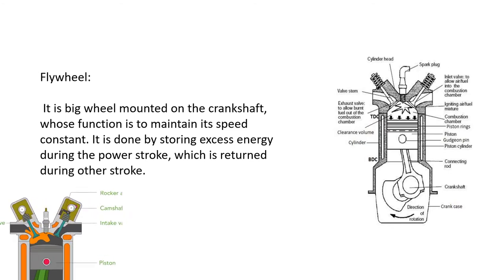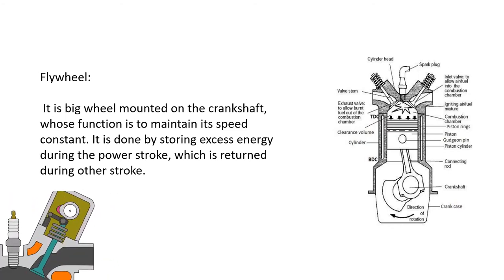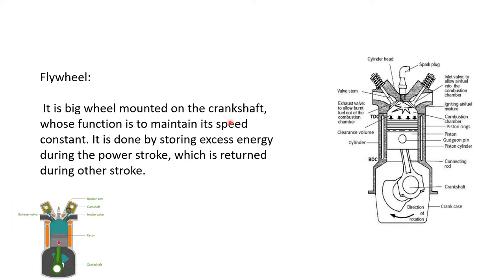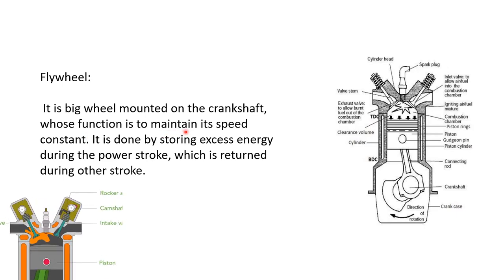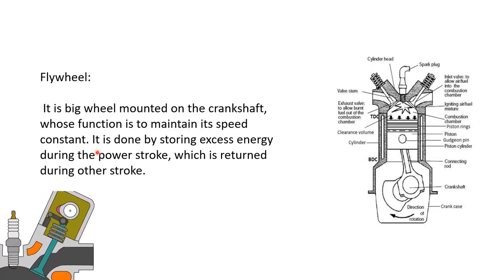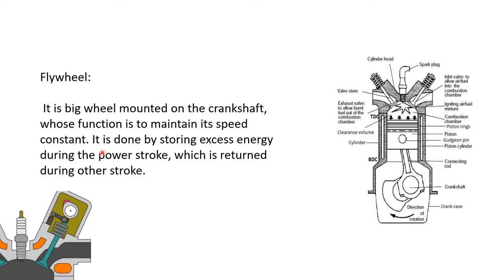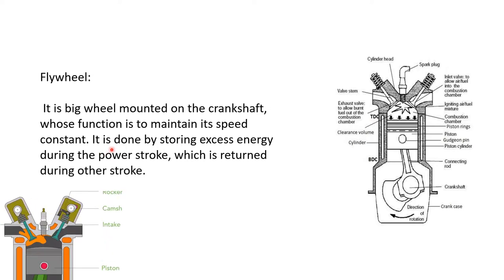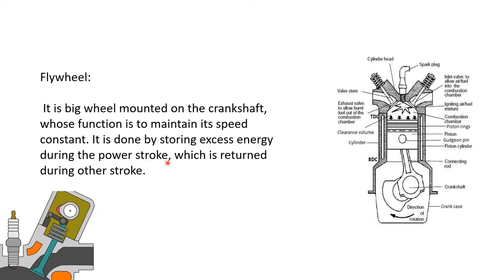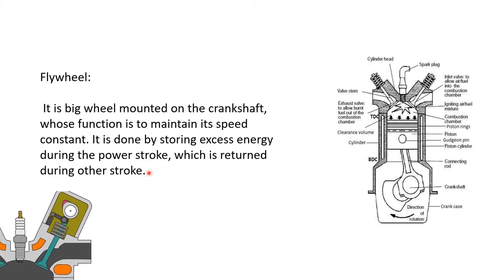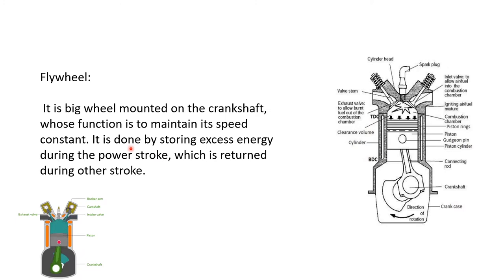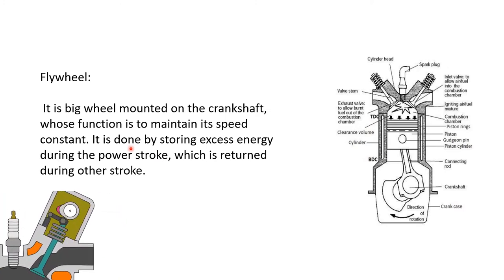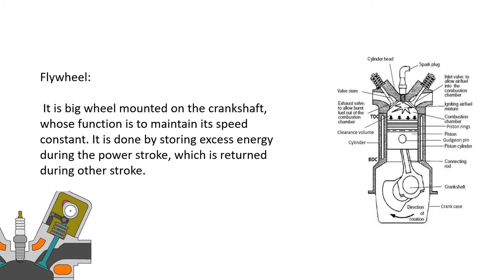The flywheel is a big wheel mounted on the crankshaft whose function is to maintain constant speed. It does this by storing excess energy during the power stroke, which is returned during the other strokes to keep the engine speed uniform.